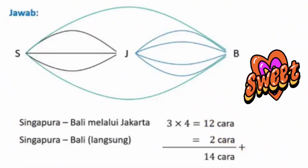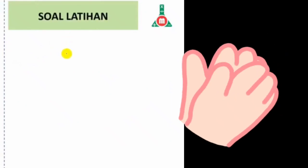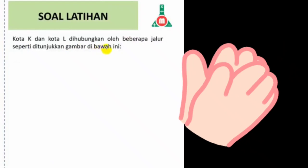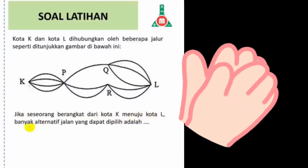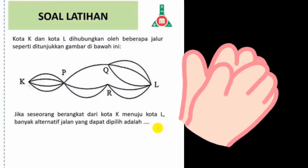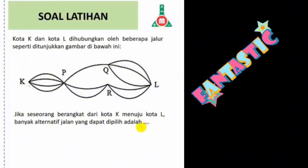Itulah 5 contoh soal terkait materi aturan penjumlahan dan aturan perkalian. Untuk mengukur sejauh mana pemahaman teman-teman, silahkan coba soal latihan mandiri berikut ini. Soal dari ujian nasional tahun 2018: Kota K dan kota L dihubungkan oleh beberapa jalur seperti ditunjukkan gambar. Jika seseorang berangkat dari kota K menuju kota L, berapa banyak alternatif jalan yang dapat dipilih? Silahkan tulis jawaban di kolom komentar. Sampai ketemu di materi berikutnya, Assalamualaikum warahmatullahi wabarakatuh.